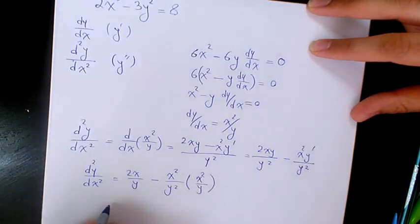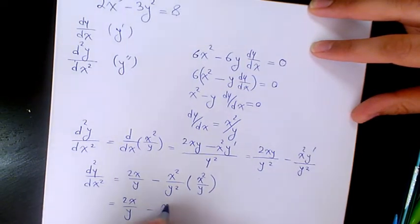Simplifying: one of the y's cancels in the first term giving 2x/y, and substituting y' = x²/y into the second term gives x²/y² · x²/y = x⁴/y³. So the second derivative is 2x/y minus x⁴/y³.